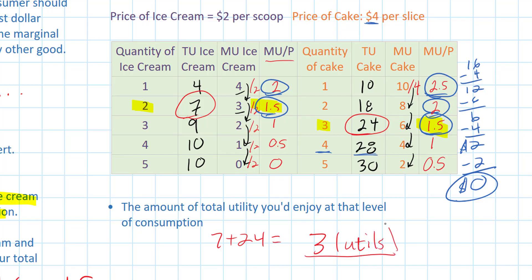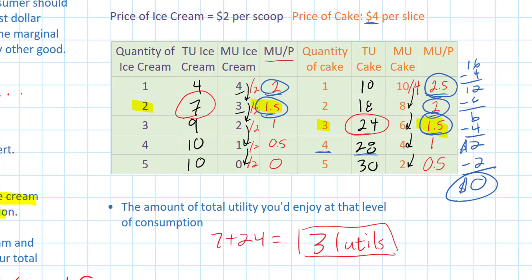Now how does that compare to if I had consumed nothing but cake? If I consumed nothing but cake, I could have bought four slices of cake for a total utility of only 28 utils.